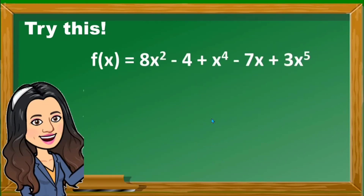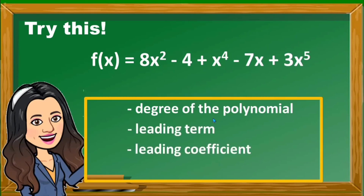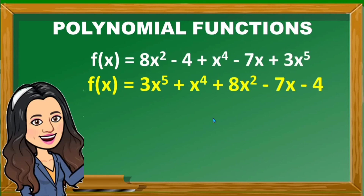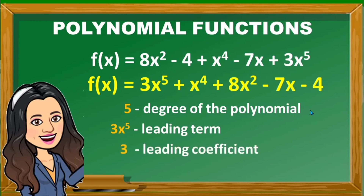You may try this one. Given the polynomial f of x is equal to 8x squared, minus 4, plus x raised to 4, minus 7x, plus 3x raised to 5. What is the degree of the polynomial? What is the leading term? What is the leading coefficient? What is the constant term? You are going to rearrange first in descending powers of x. Therefore, the degree of the polynomial is 5, the leading term is 3x raised to 5, the leading coefficient is 3, and the constant term is negative 4.